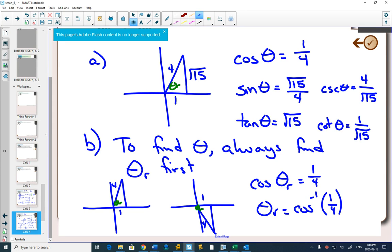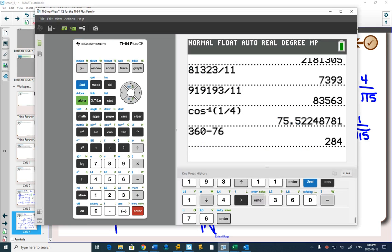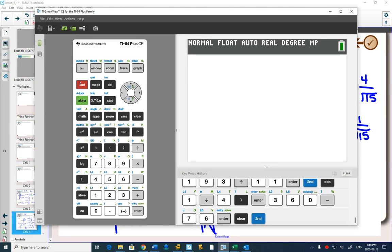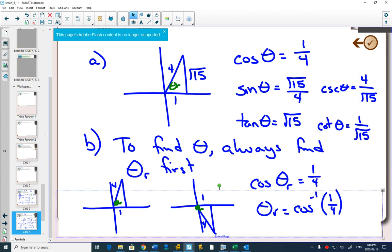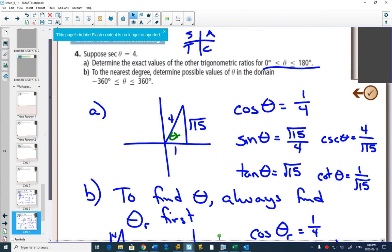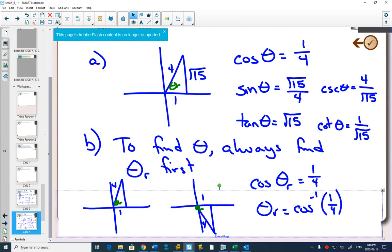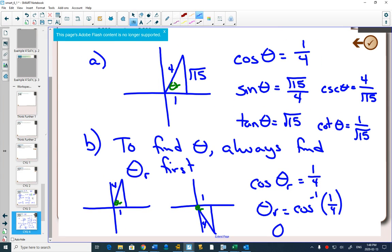And so on my calculator, I make sure that I'm in degrees, and I go cos inverse of 1 divided by 4, 75.5. The question says, round to the nearest degree. So 75.5 rounds to 76 degrees.